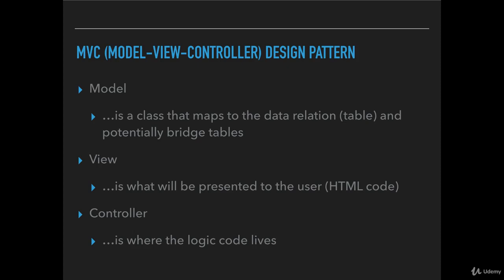Let's first start with the model. It is a class that maps to the data relation and potentially bridge tables. If this sounds confusing, let's say that we are building a blog application. It has users, articles, and comments. A user is one model, article is a model, and comment is also a model. So when you are about to create a new user, you are referencing to a model — not a database table. The model will take care of everything in the background.